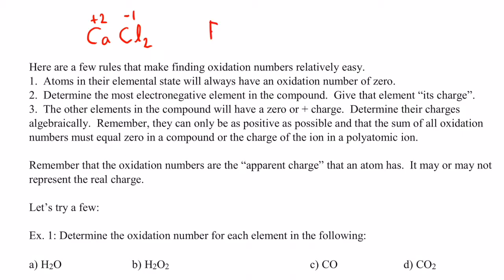Let's look at Fe2O3. Iron is a transition metal that can have multiple oxidation states, so we do the other atom first. Oxygen gains two electrons to attain a noble gas configuration, so its oxidation number is negative two. With three oxygens, that's six negatives total. Since the compound is neutral, the two iron atoms must provide six positives, giving each iron an oxidation number of positive three.